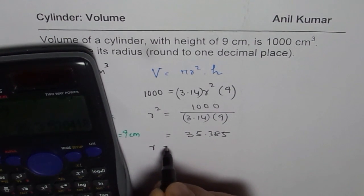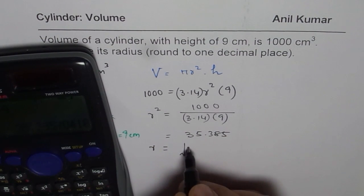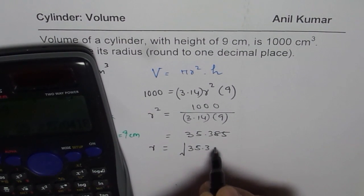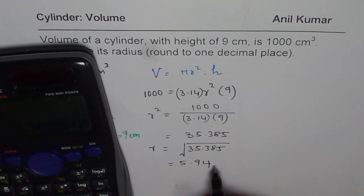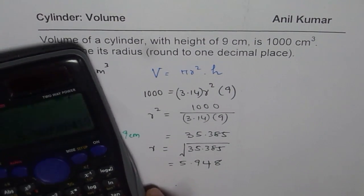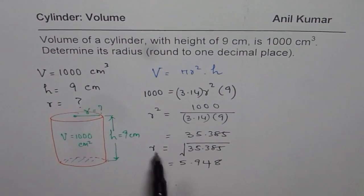So we get our answer here for r square as equal to 35.385. So what should be r? r should be the positive value square root of 35.385. So let's do square root of our answer. So that is 5.948 as our radius.